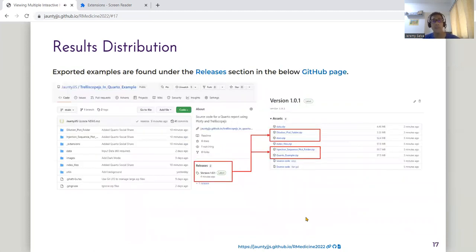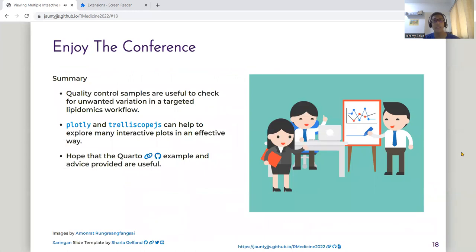I have all these exported examples in my release section of this GitHub page. This GitHub page is also where the source code of my Quarto report is. With that, I would like to end my presentations with these three points, saying that quality control samples are useful to check for unwanted variation, and that the Plotly and Trelliscope.js package are useful in my work. And there is a Quarto example to help you be able to do it by yourself.